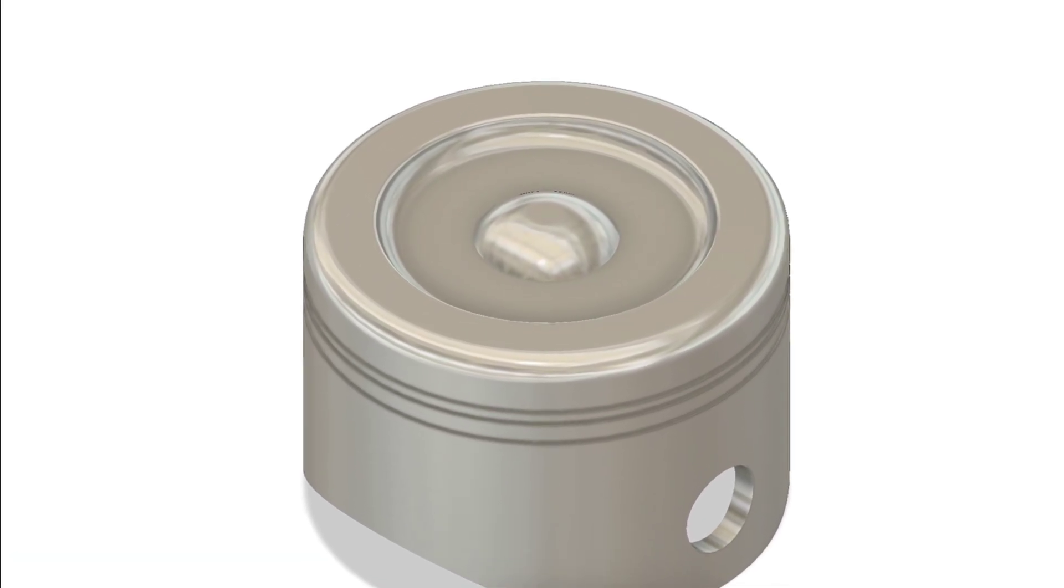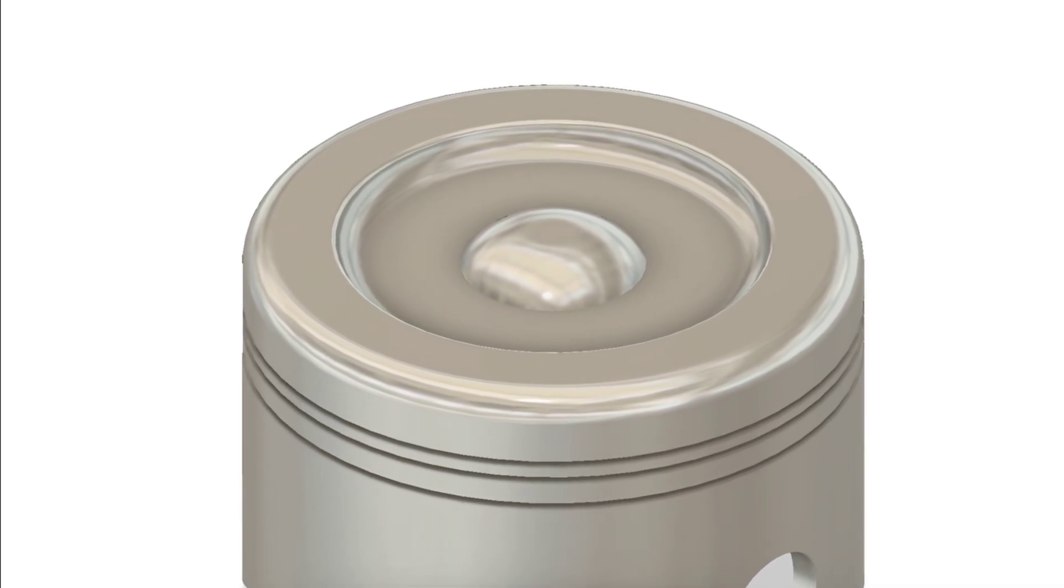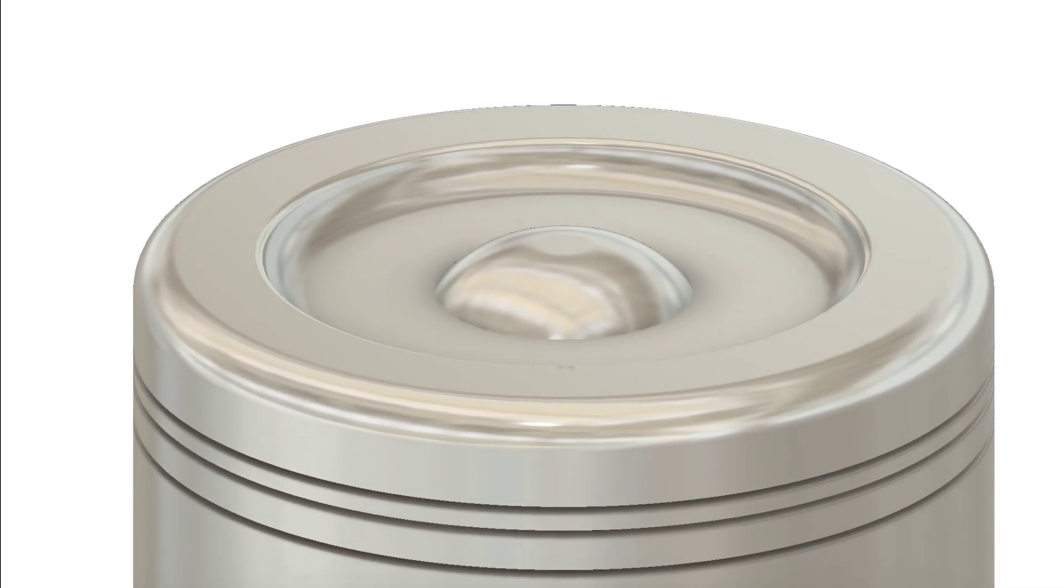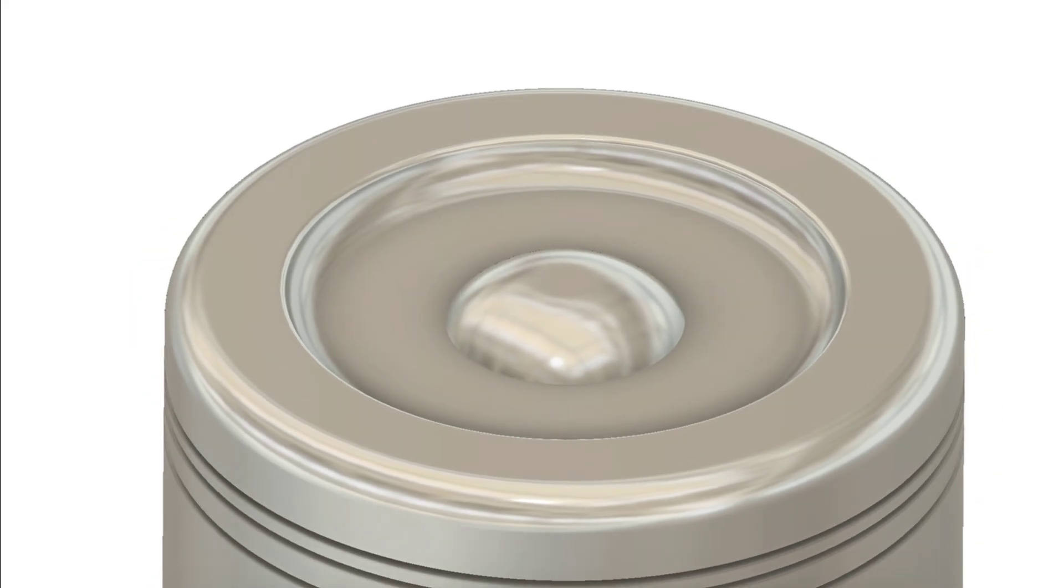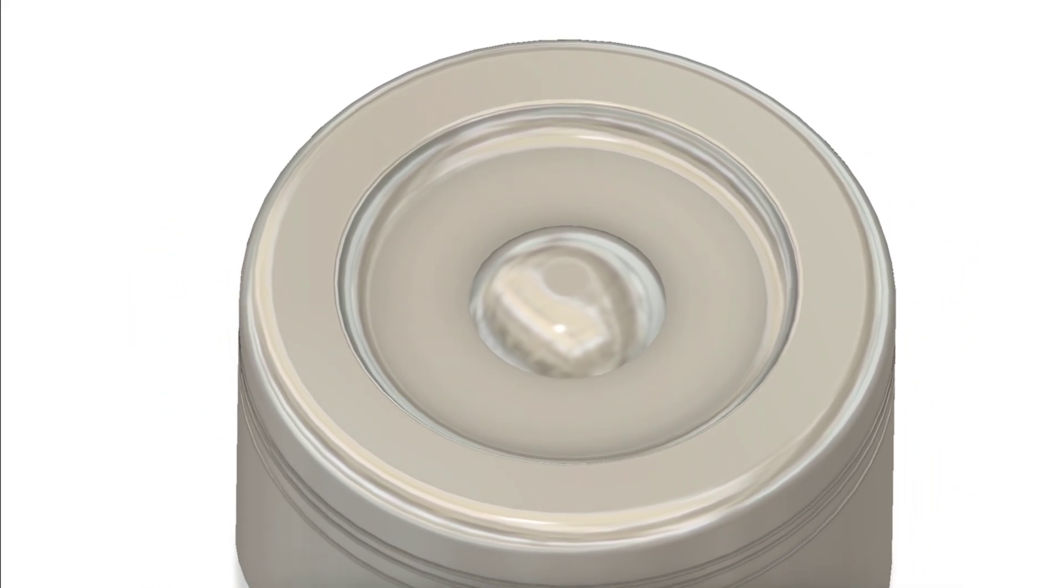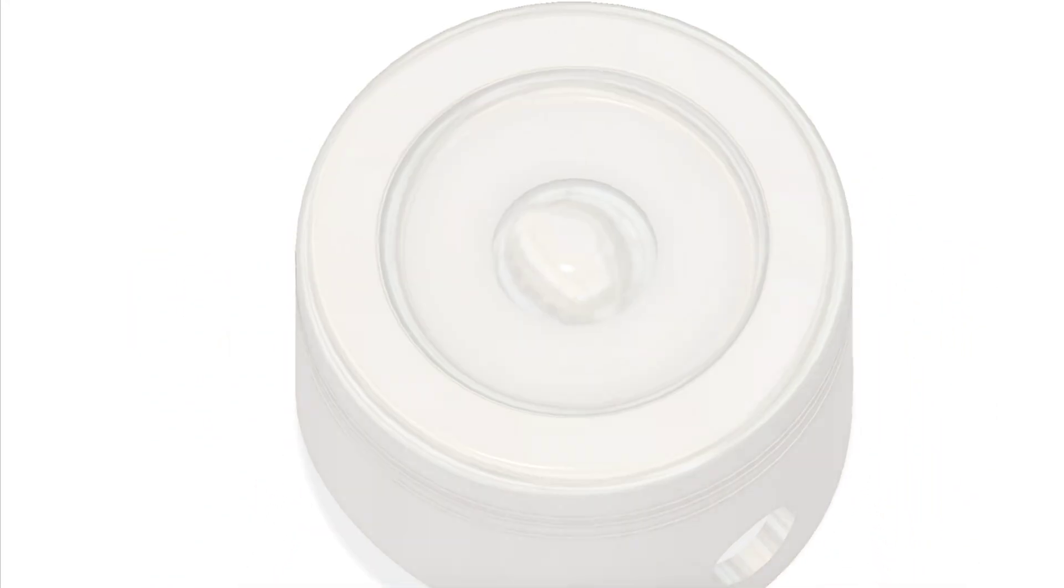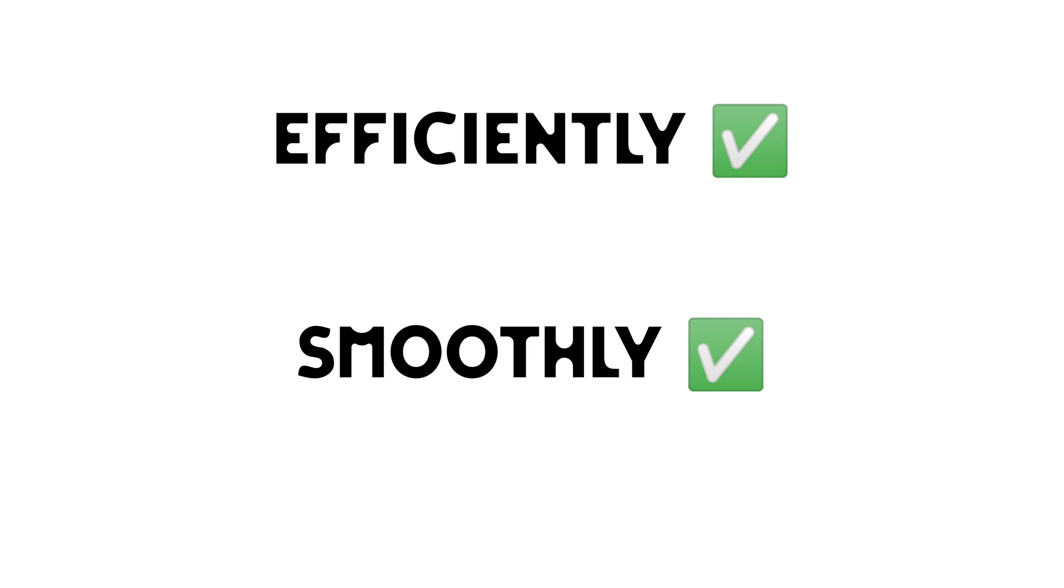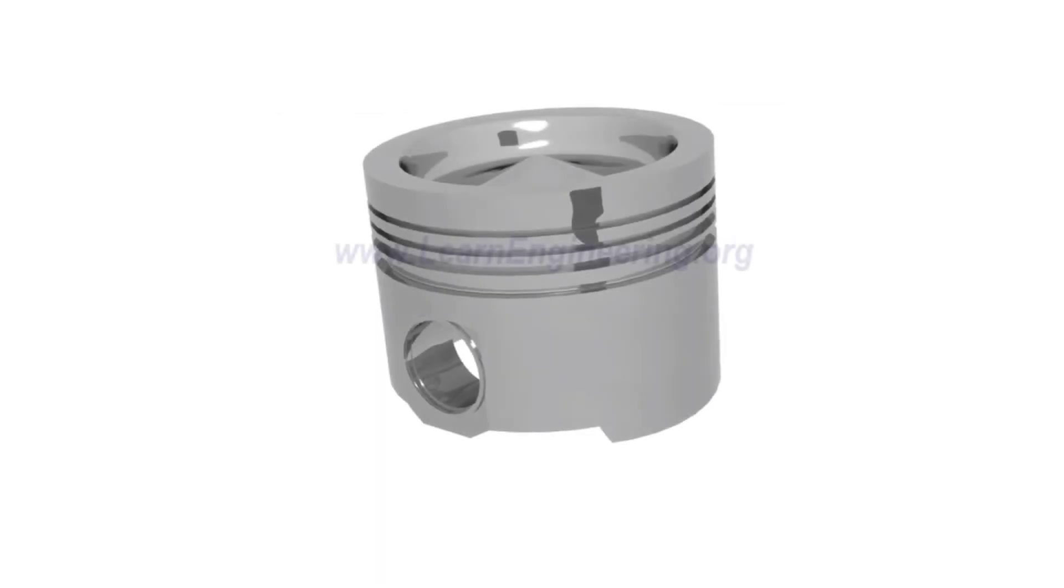Now here's where the bowl comes in. That bowl, or cut, or cavity, whatever you want to call it, is not just for looks. It's actually a built-in combustion chamber carved right into the piston head. And it plays a huge role in making sure the engine runs efficiently, smoothly, and without turning into a smoke machine.